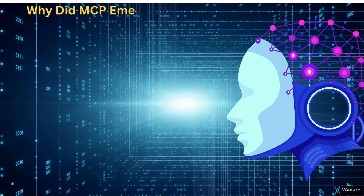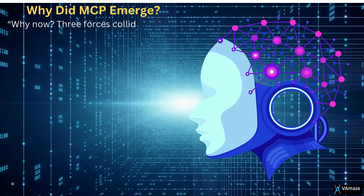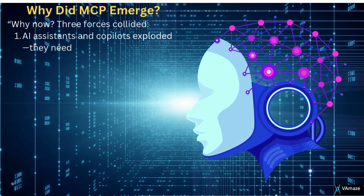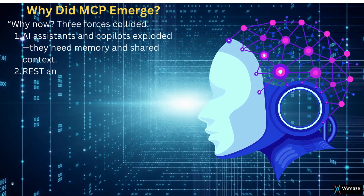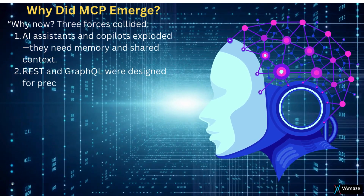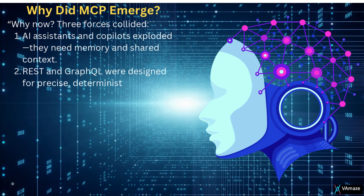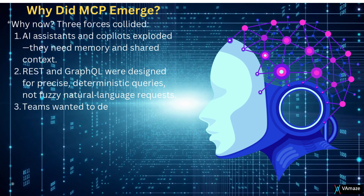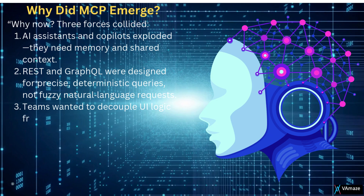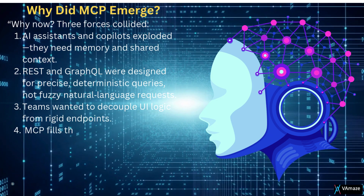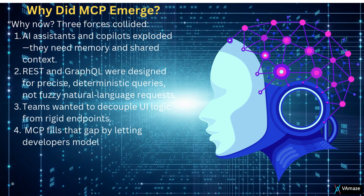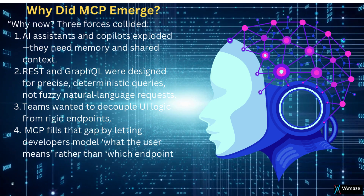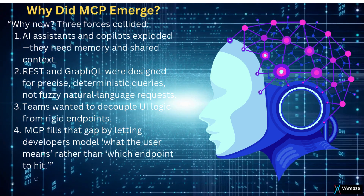Why did MCP emerge, and why now? Three forces collided. First, AI assistants and copilots exploded — they need memory and shared context. Second, REST and GraphQL were designed for precise deterministic queries, not fuzzy natural language requests. Teams wanted to decouple UI logic from rigid endpoints. MCP fills that gap by letting developers model what the user means rather than which endpoint to hit.